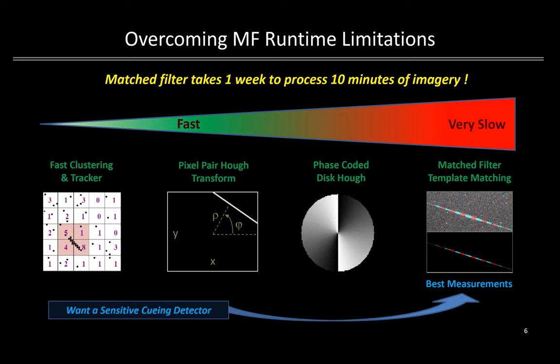Anyone who has employed match filters realizes that there are several runtime considerations to overcome because of the large number of hypothesized motions one must search through. For example, a brute force match filter handling all the potential meteor motions of the EMCCD imagery was found to take one week to process only 10 minutes of video on a 64-node cluster. Since this was impractical, the alternative was to use a high-speed video meteor detection algorithm with a moderate false alarm rate at the front end of the processing pipeline, providing a dramatically reduced hypothesis set that then feeds the match filter.